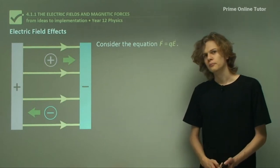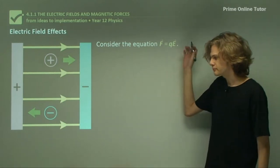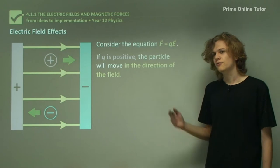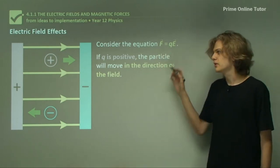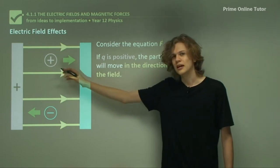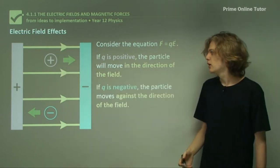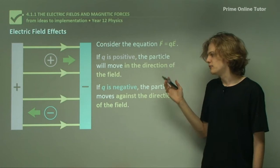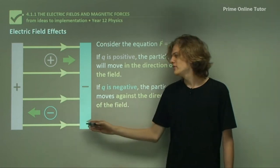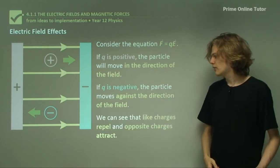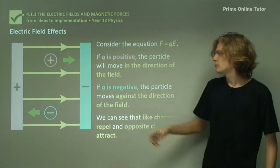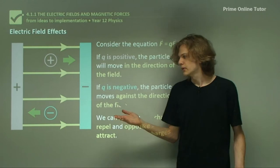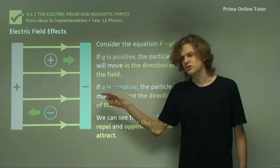So let's take this a bit further. Considering the equation F equals QE, and we have an electric field here and two charged particles, we can see that if Q is positive, the F will be in the same direction as the E, and so the positively charged particle will move in the same direction as the electric field. On the other hand, if Q is negative, then the force will point in the opposite direction to the electric field, and the negatively charged particle will move in the opposite direction that the electric field points. Looking at the charged plates, we can see that the positively charged particle is being attracted to the negative plate, and so opposite charges attract. And similarly, we can see that like charges repel each other.